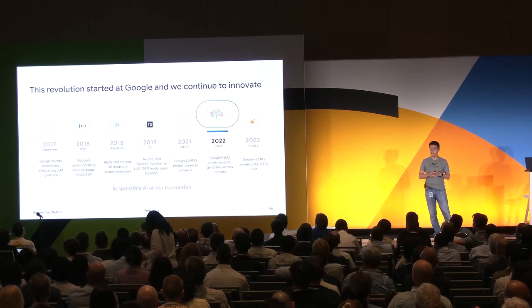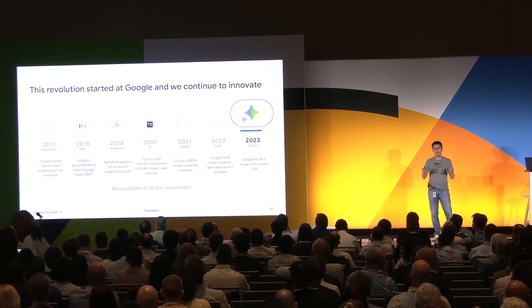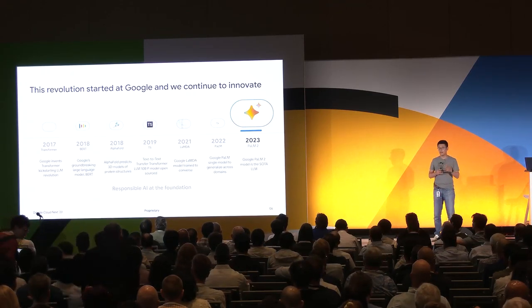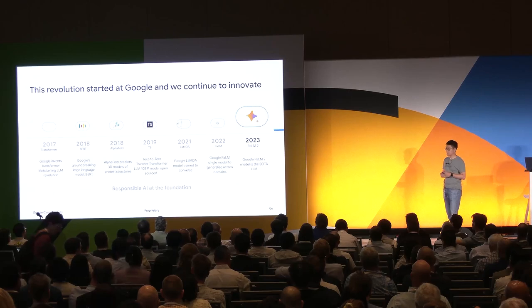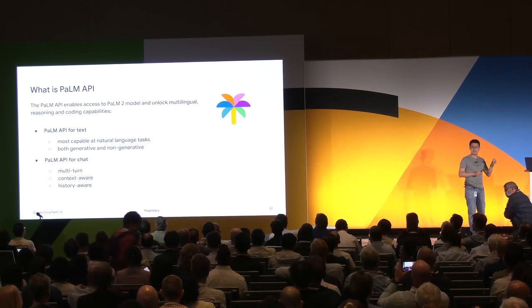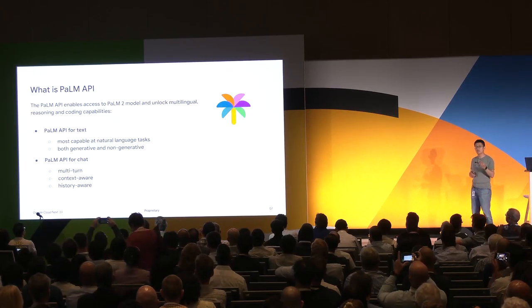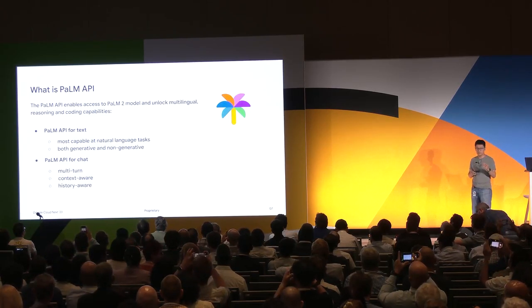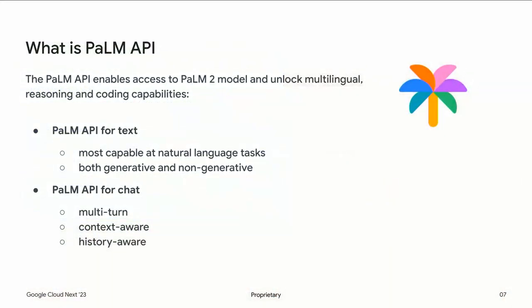Fast forward to 2023, we launched Palm 2 at Google I/O, our next-generation state-of-the-art large language model. Palm is short for Pathway Language Model. It is Google's vision to create a single model that could not only generalize across tasks, but also domains, while being highly efficient. Through the Palm API, we give you direct access to the underlying model so you don't have to worry about scaling — it's a fully managed service that also unlocks multilingual capability, reasoning, and coding tasks.